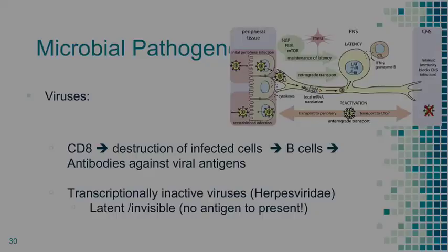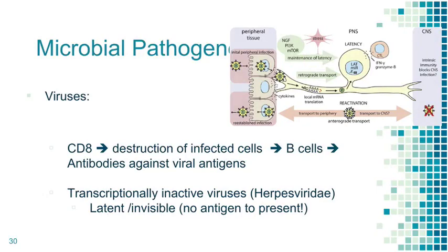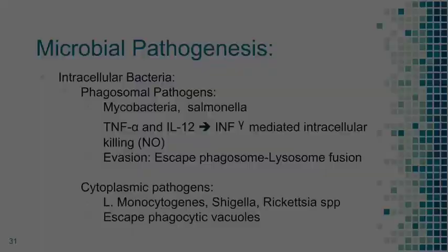In herpes viruses, which are intracellular, CD4 cells detect destruction of infected cells, call B cells, and they destroy deceased cells so viral particles are released and presented as antigens to B cells, which then make antibodies. In latent infections like HSV and CMV, viral particles remain transcriptionally inactive — not expressing their peptides or proteins — so CD8 cells detect nothing and they just stay latent until reactivated.